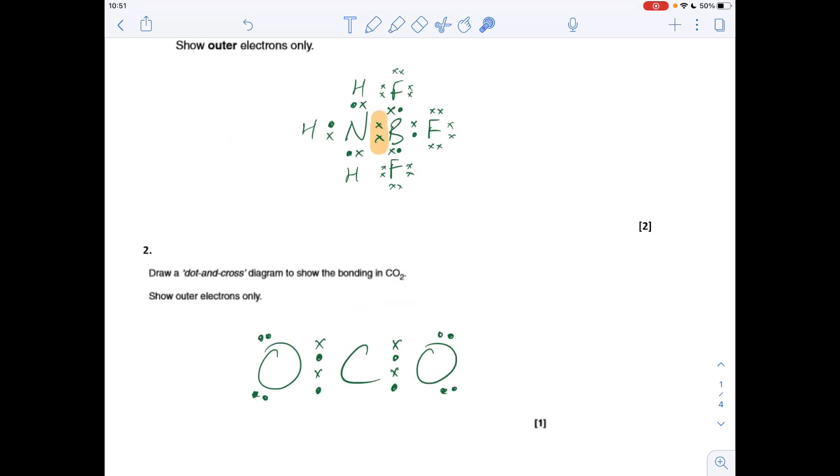Question two, dot and cross diagram for CO2. It's obviously covalent, two non-metals, and so we've got double bonds existing between the carbon and the oxygens, so we need two pairs of electrons in each overlap.